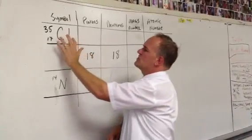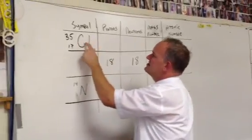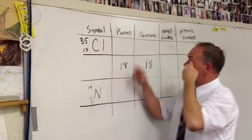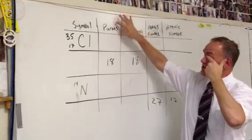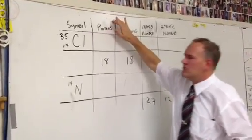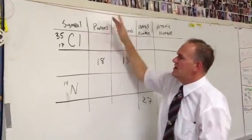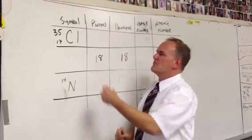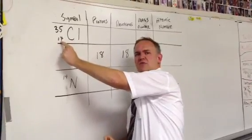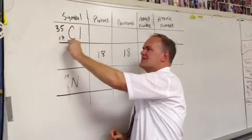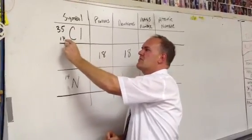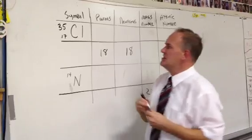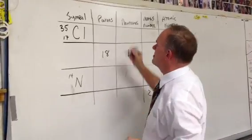Let's look at this first one. The symbol is Cl-17-35, and the first thing we've got to figure out is the number of protons. That's easy, because the number of protons is that little number down there. Remember, the Z number is always on the bottom. So we put the number of protons: 17.